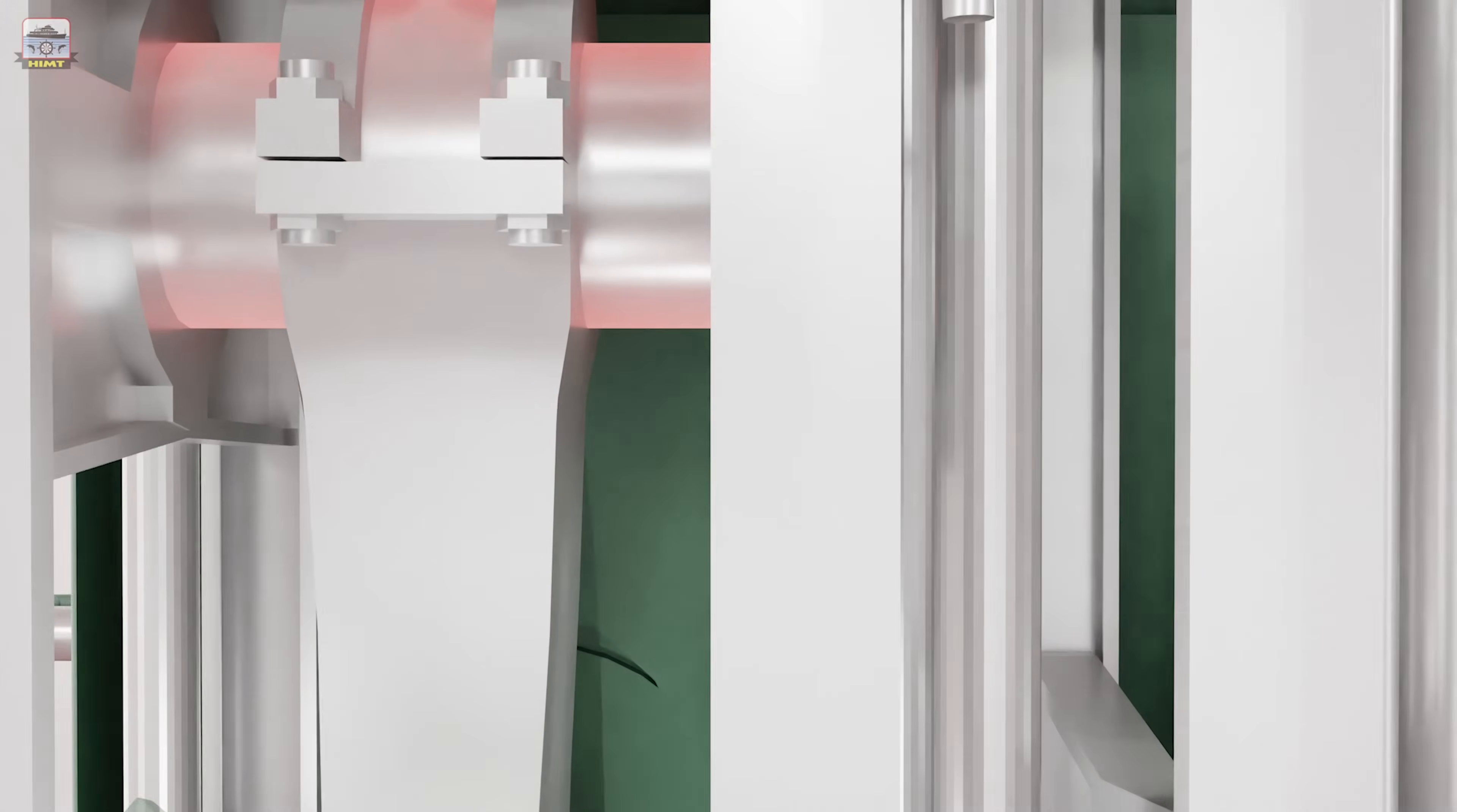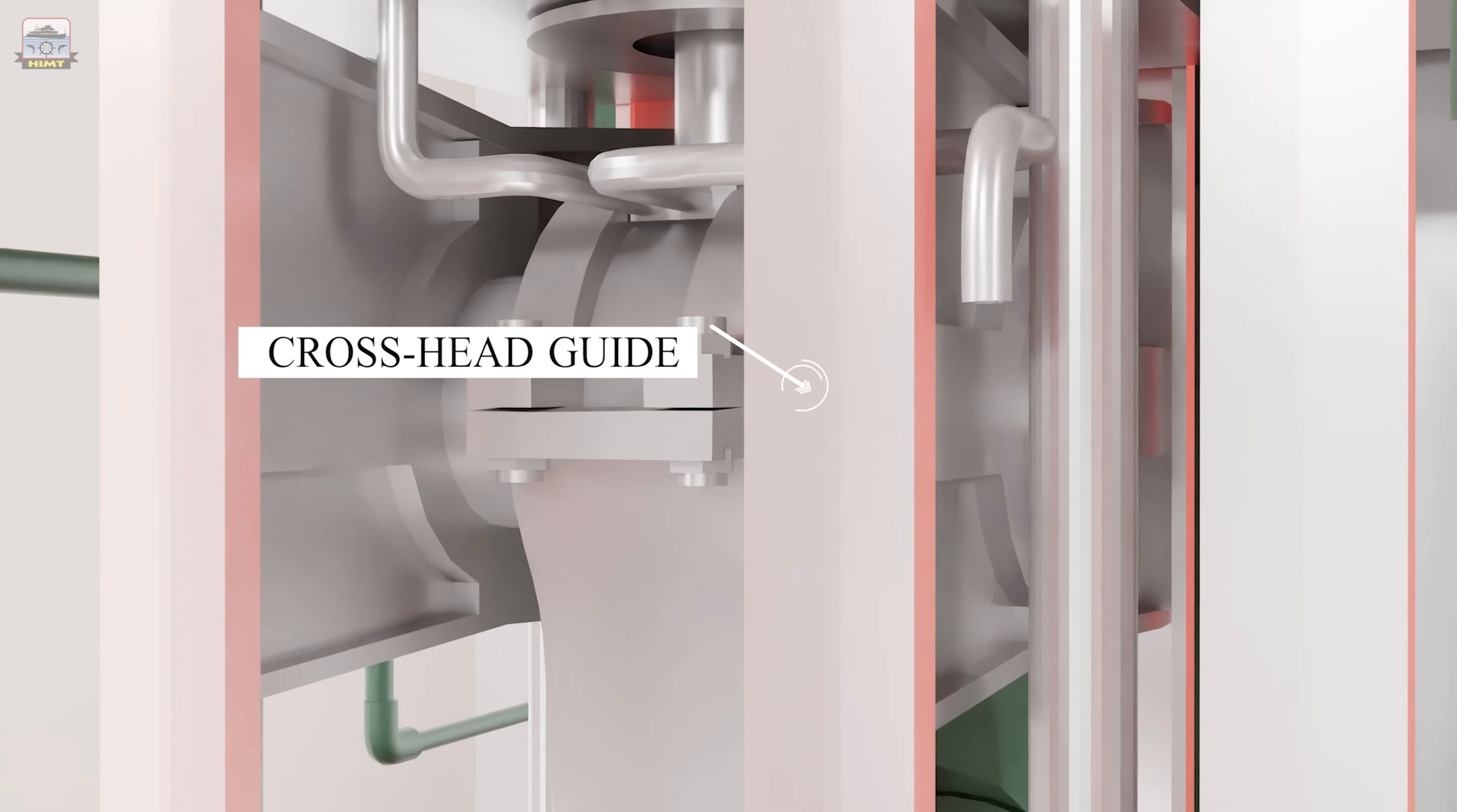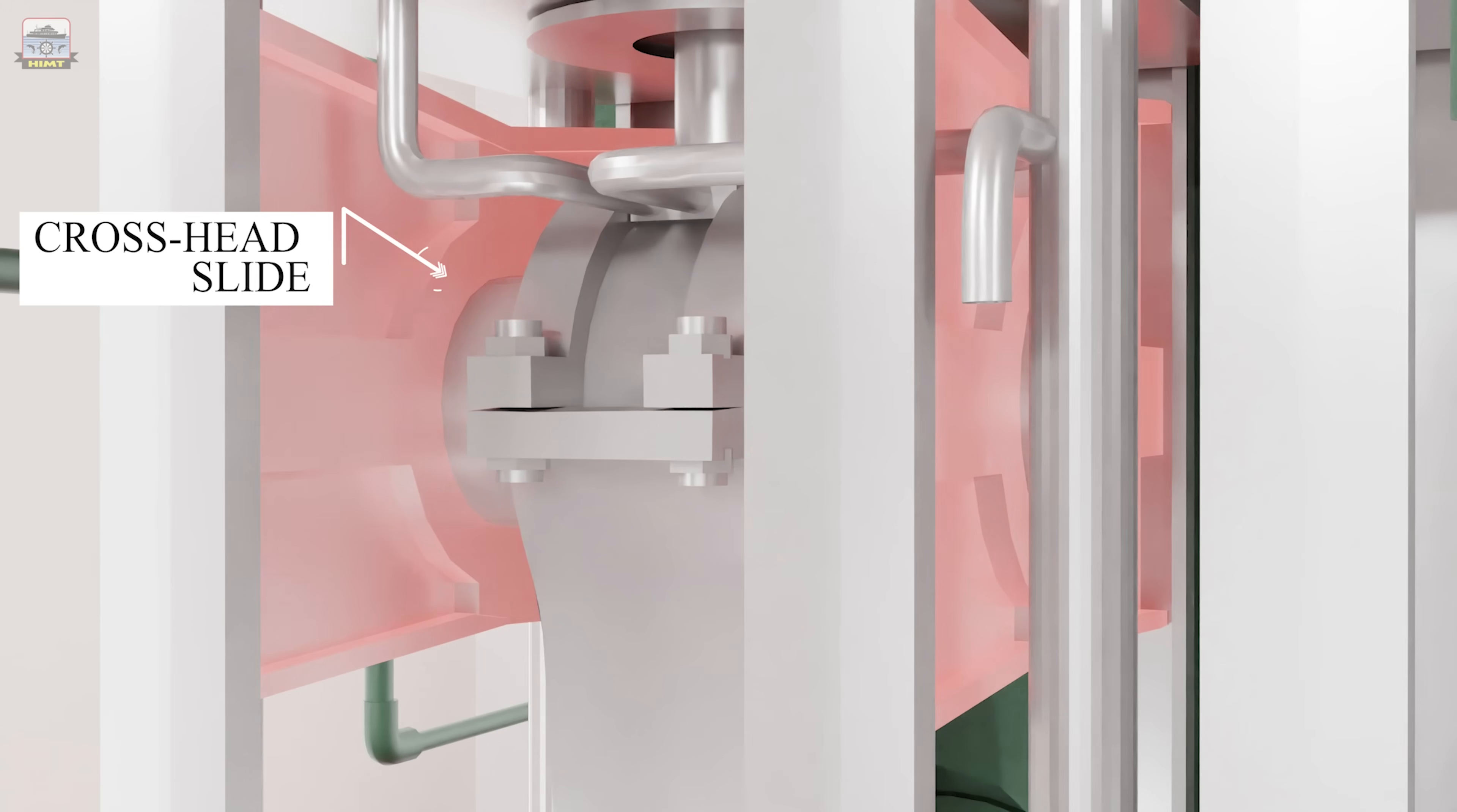The cross-head connects the piston rod to the connecting rod. It helps in eliminating side thrust on the piston. The piston rod is attached to the top side of the cross-head pin. The top end of the connecting rod having a cross-head bearing is connected to the cross-head pin. Inside of the cross-head guides, the cross-head slides with shoes which are lined with white metal.